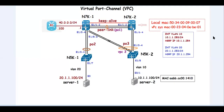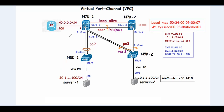Let's look at the topology. We have VPC peer devices N7K1 and N7K2. R1 is connected to N7K1. Server1 is connected to N5K1, and N5K1 is connected to N7K1 — but the link between N7K1 and N5K1 is not part of VPC because N5K1 is not connected to N7K2. So port-channel 2 on N7K1, with Ethernet 1/3 and 1/4, represents the orphan ports, since it is not part of VPC. When the peer link goes down, these ports will be affected.